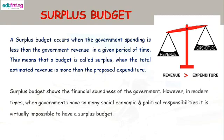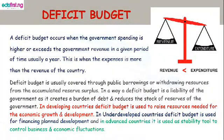Looking at surplus budget: a surplus budget occurs when the government spending is less than the government revenue in a given period of time. This means that a budget is called surplus when the total estimated revenue is more than the proposed expenditure. Surplus budget shows the financial soundness of government when there is too much inflation. However, in modern times, when governments have so many social, economic, and political responsibilities, it is virtually impossible to have a surplus budget.